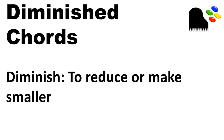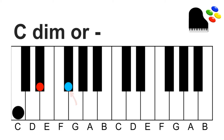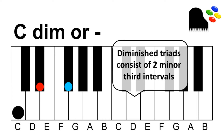Diminished chords. Diminished means to reduce or make smaller. The basis for our diminished chord is going to be a minor chord, and we're just going to take this top note and lower it a half step instead of raising it like we did before. The chord extension for diminished chords is going to be DIM, or a minus sign. Diminished triads consist of two minor third intervals.